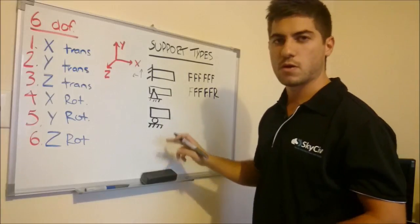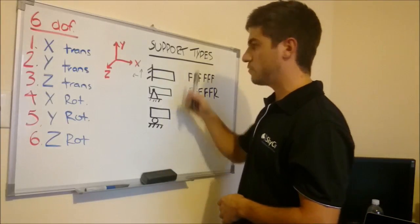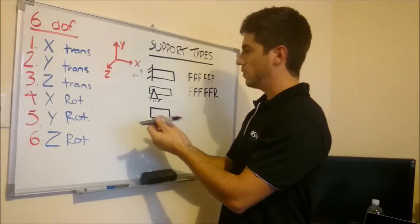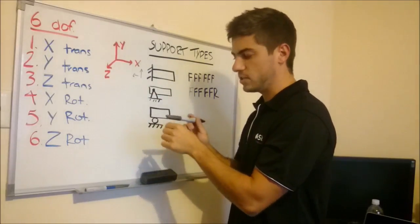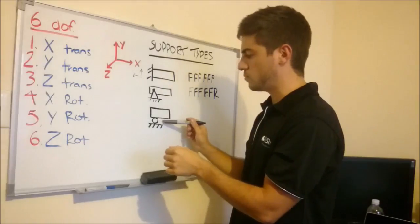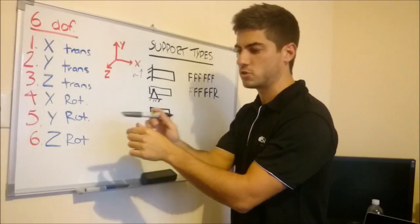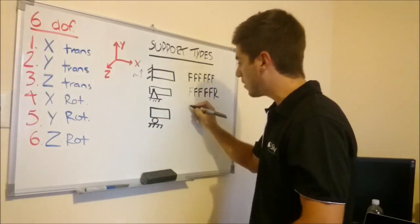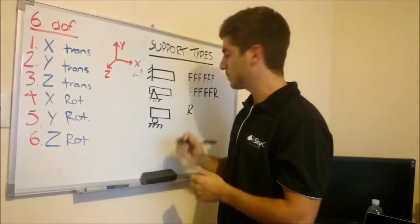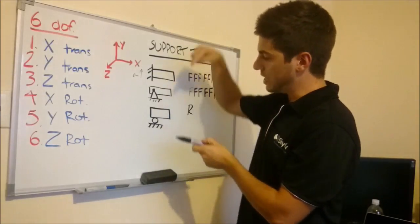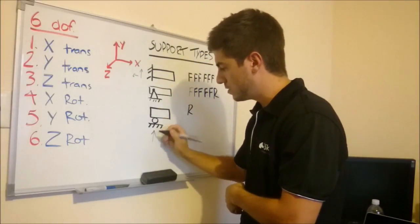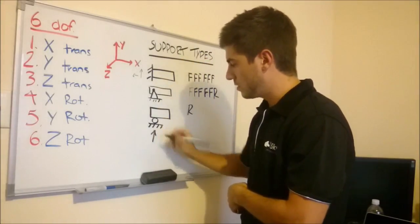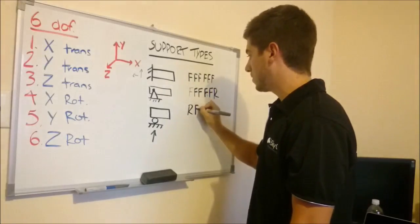Finally in this case we have a roller support. Now in this case if we go through each of the 3, we can see X translation, if I push on this beam, it's going to move. That support does not offer any restraint, it'll just roll, it'll move. So we're going to start off with an R, because of that. If I try and push down, the support will support it, and I'll get a reaction here. Therefore, it is fixed.